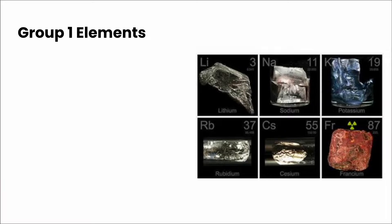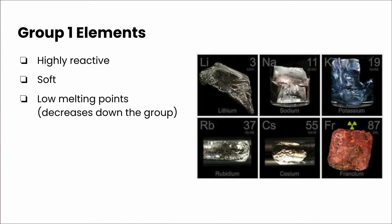Group 1 elements are known as our alkali metals. They are highly reactive, they're soft, and they have low melting points which actually decrease down the group.